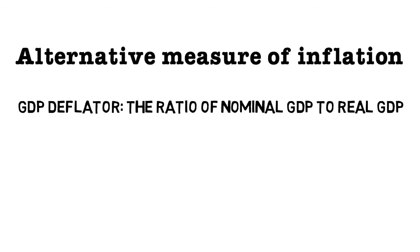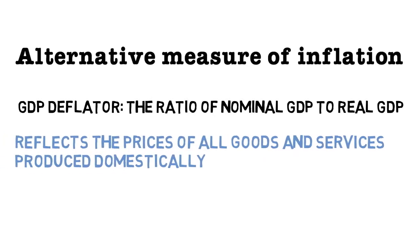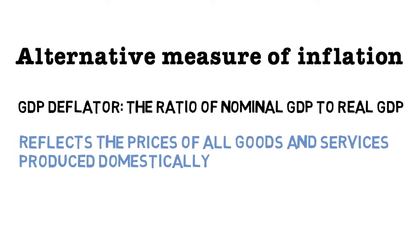So we do have a couple of alternative measures of inflation. One of which is something called the GDP deflator. This is the ratio of nominal GDP to real GDP, which would be set to a base year. And that would be a different measure of inflation because it reflects the prices of all goods and services produced domestically.